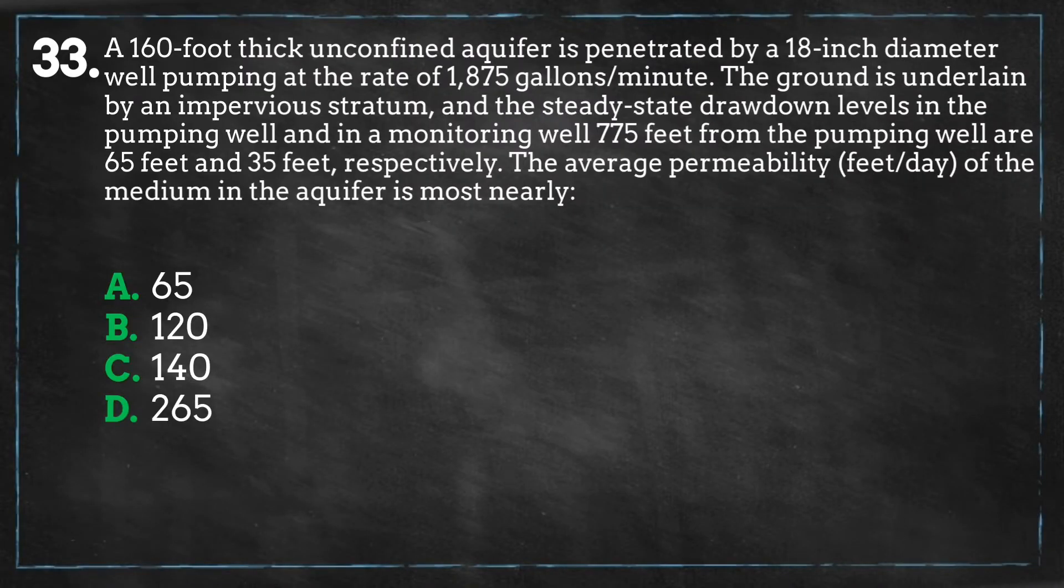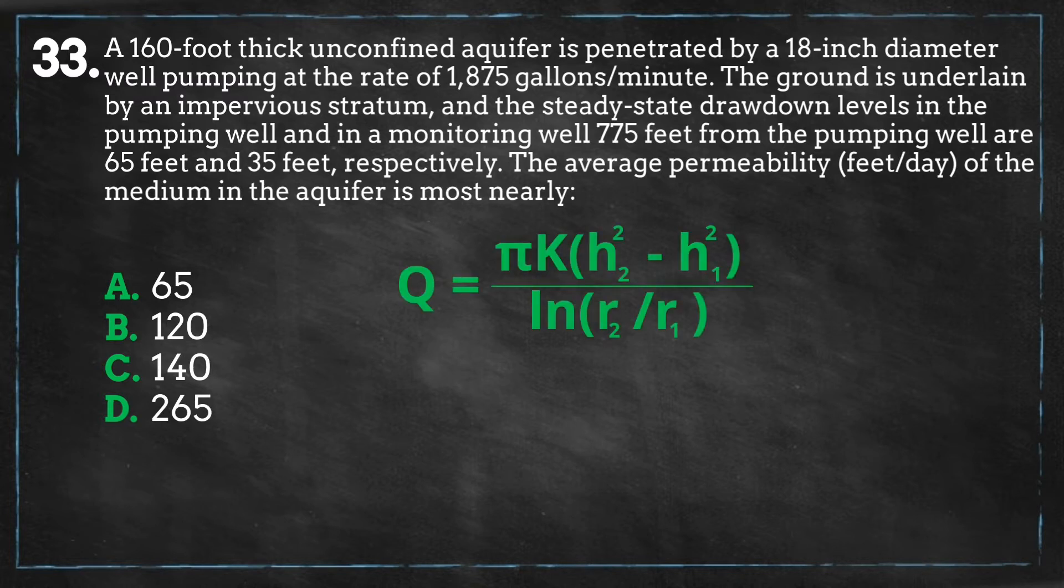So this problem we are looking for the permeability of this unconfined aquifer. The equation we'll be using is the following, where q is the flow rate from the aquifer, k is the permeability in units of distance per unit of time, h2 is the distance from the bottom of the aquifer to the second sampling point, and h1 is the distance from the bottom of the aquifer to the first sampling point.